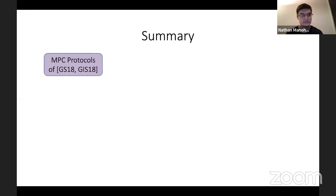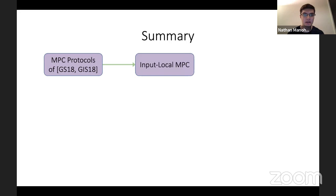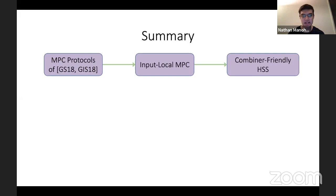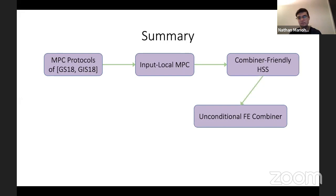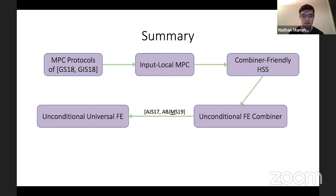We started with MPC protocols from Garg-Srinivasan 2018, which construct two-round MPC from two-round OT. These protocols aren't input-local but are close to being so, and we modified them to obtain an input-local MPC protocol. Using this, we instantiate a special secret sharing scheme we call combiner-friendly homomorphic secret sharing, which works nicely to construct FE combiners. From this we construct our FE combiner, and using prior works this immediately implies an unconditional universal FE construction.